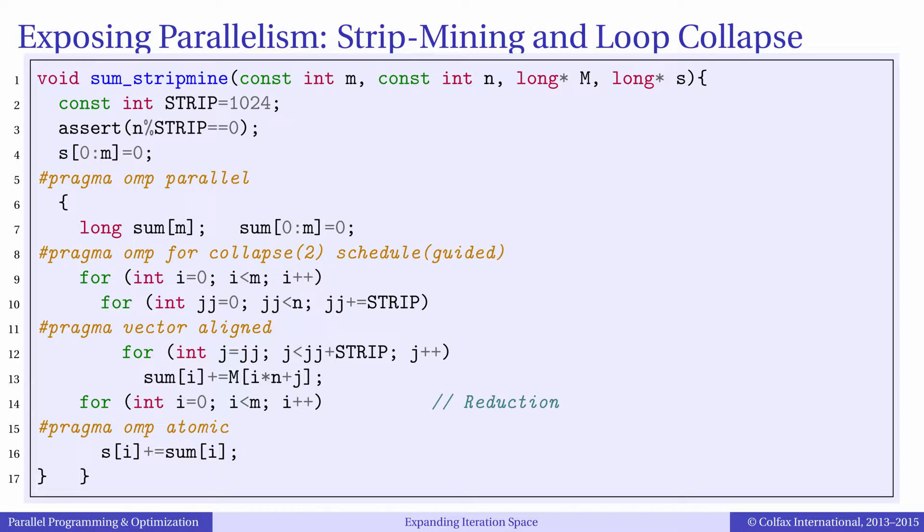This code shows the optimized version of the matrix sweep microkernel. It is a little more complex than original code. To understand what is happening, let's start with the innermost loop.